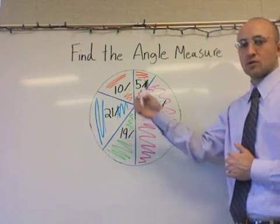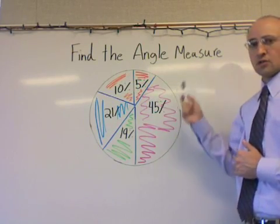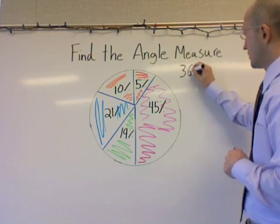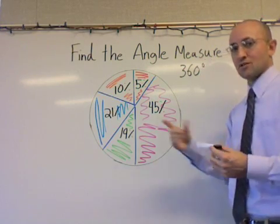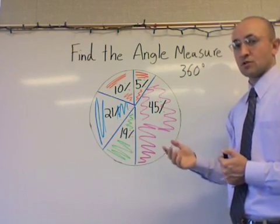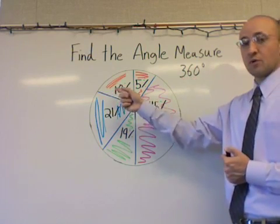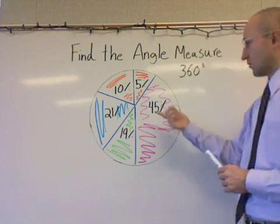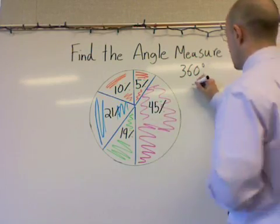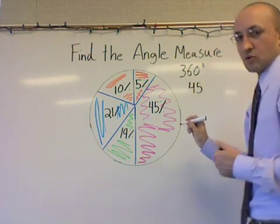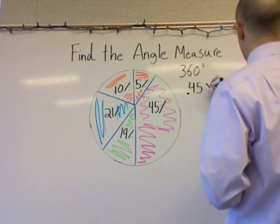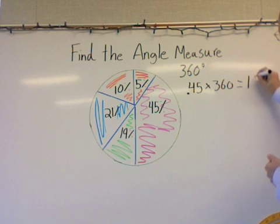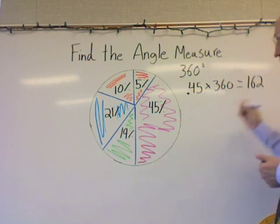What we're being asked to do is find the angle measure. Remember, the total measurement of a circle is 360 degrees. What I want to do is take all of my percentages, turn them into decimals, multiply them by 360, and that's going to give me the degree of each one of these angles — each one of these pie slices. Let's start with the largest one, 45%. As a decimal that's 0.45, multiplied by 360, we get 162 degrees.